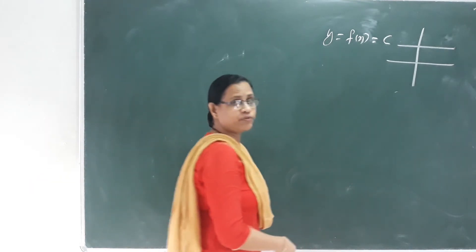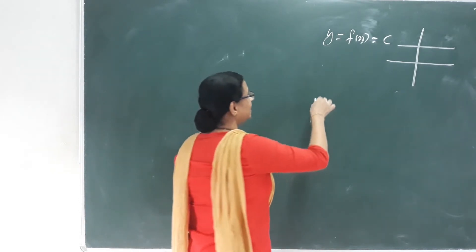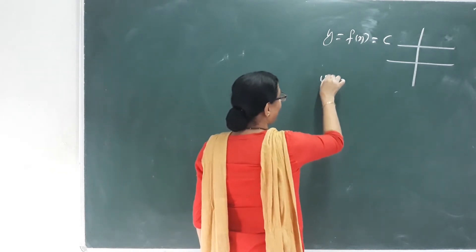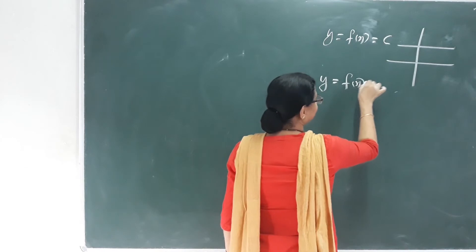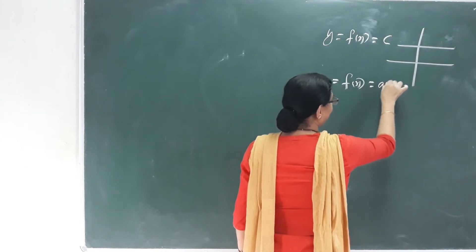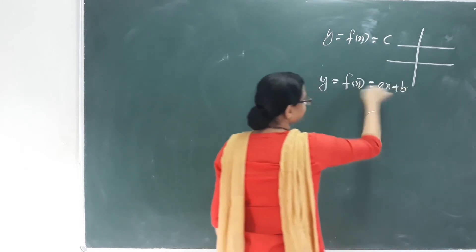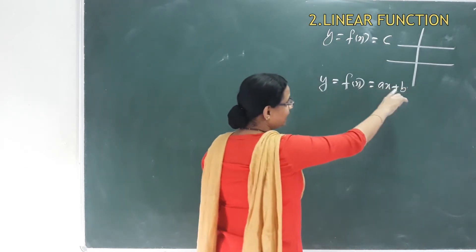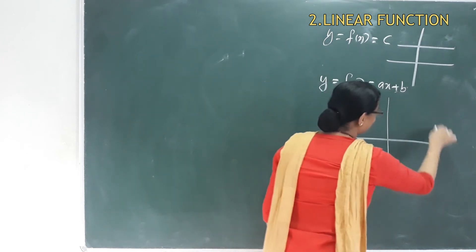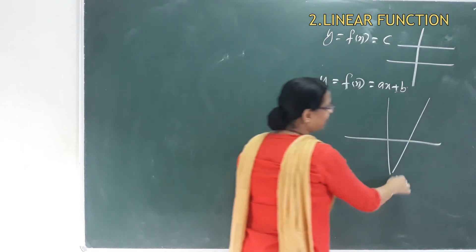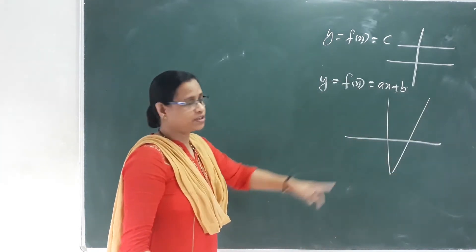The next function is the linear function. The real function f from R to R is y = f(x) = ax + b. This is a linear function, and its graph is a straight line.